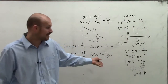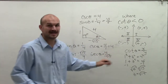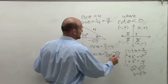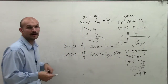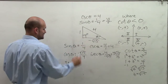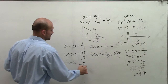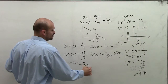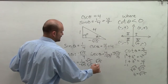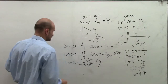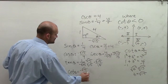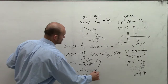We can't leave a radical in the denominator, so I rationalize: secant equals negative 4 square root of 15 over 15. For tangent, that's opposite over adjacent: 1 over negative square root of 15. Rationalizing by multiplying top and bottom by square root of 15 gives negative square root of 15 over 15. Finally, cotangent is the reciprocal of tangent, which is negative square root of 15 over 1, equal to negative square root of 15.